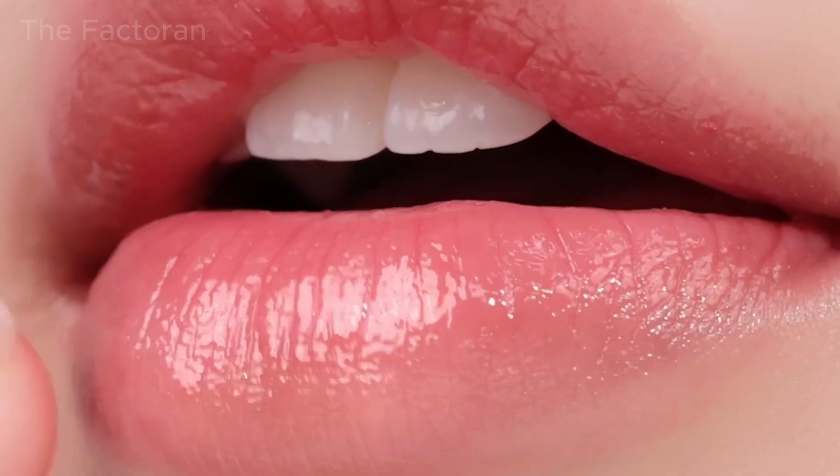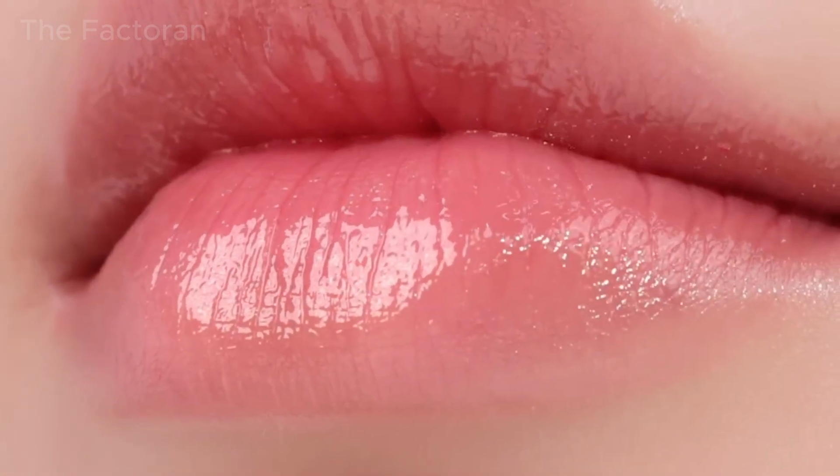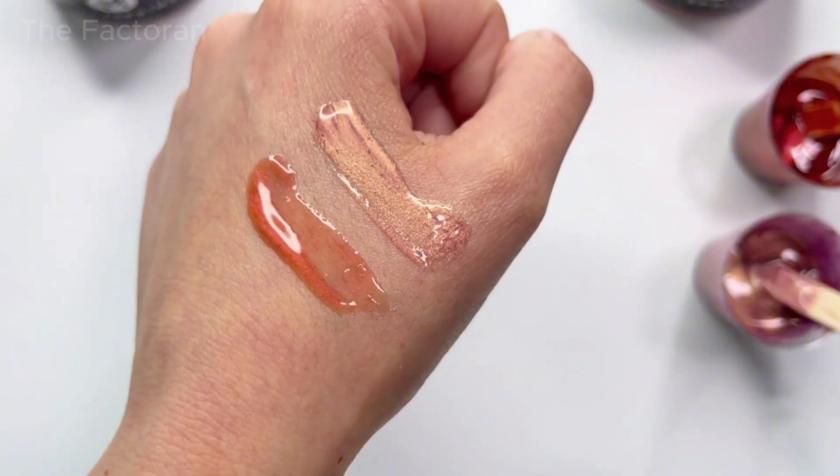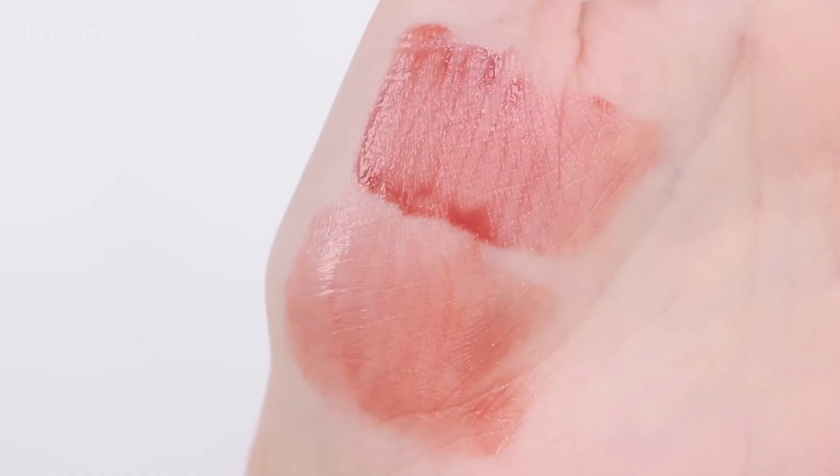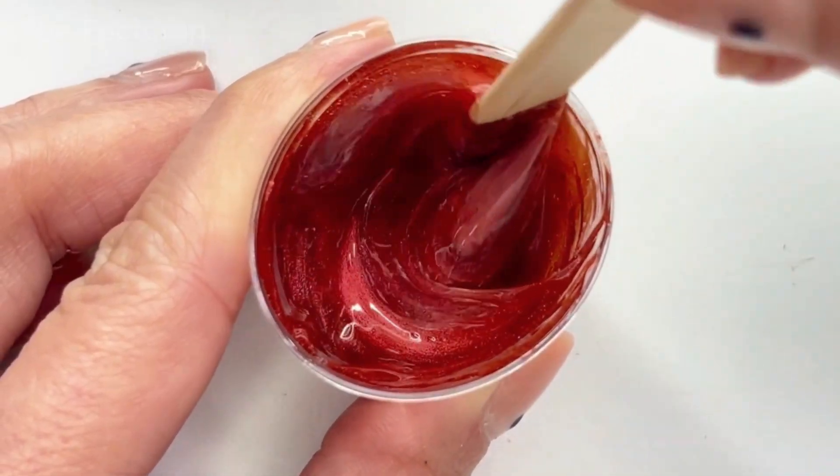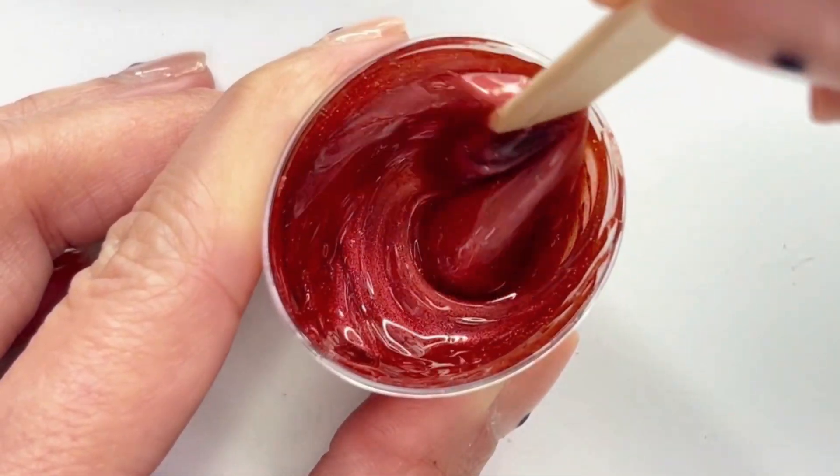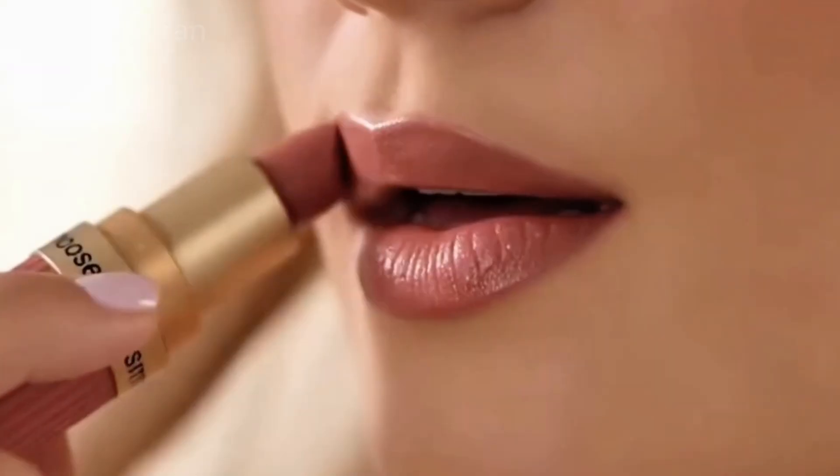When blended into the lipstick, they reflect light at multiple angles, creating glossy or metallic effects depending on the formulation. Differences in the type and particle size of these pearlescent materials are what make two lipsticks of the same red shade feel and appear completely different on the lips.